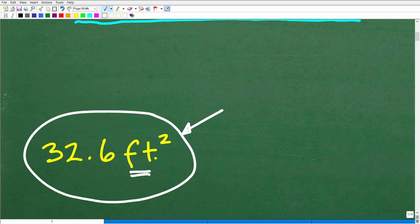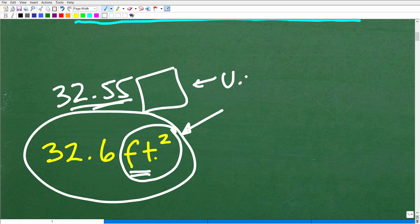32.6 feet squared. So let's suppose you have like 32.55 or something like that, and you said, well, I was pretty close. Of course, I kind of rounded up a bit, but here's the deal. If you didn't give me the proper unit of measure, we're talking about area of a sector. We're talking about area. It is critical.